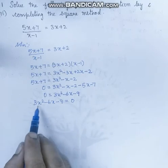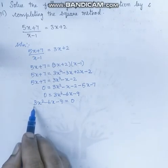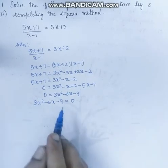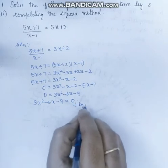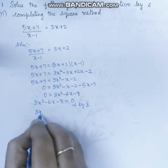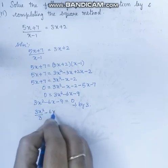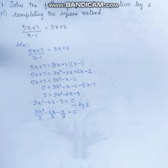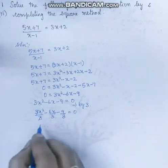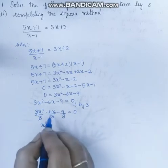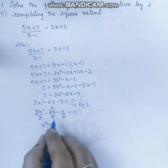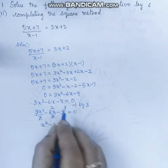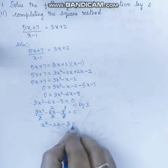Now, since the x square term has a constant coefficient, we divide the entire equation by 3. Dividing: 3x square by 3, minus 6x by 3, minus 9 by 3, equals 0. The 3s cancel, giving us x square minus 2x minus 3 is equal to 0.